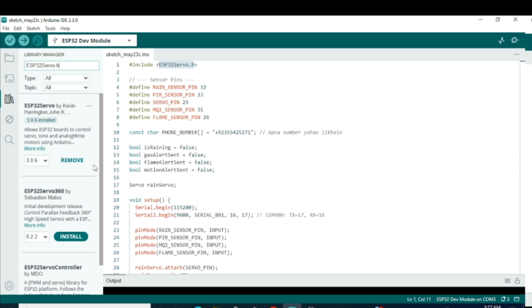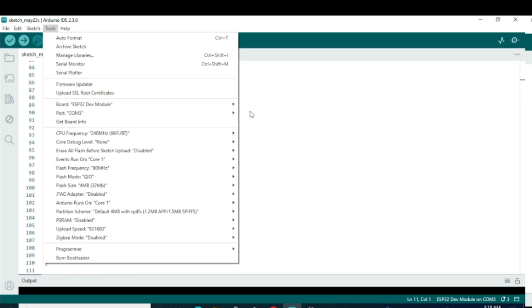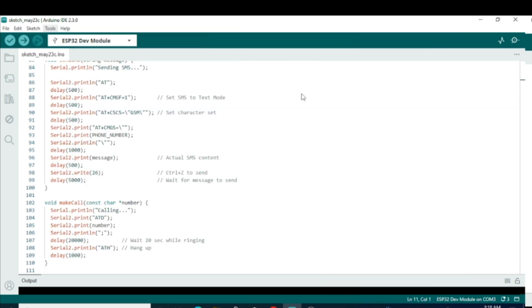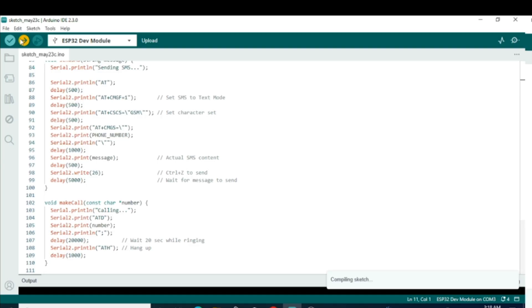Scroll down in the code where you need to write your mobile number. Enter the number where you want to receive the alert message for motion detection, gas, or fire. If you are in Pakistan, start with plus 92, followed by your mobile number. If you are in another country, replace plus 92 with your country code and add your number. After that, go back to Tools. Select the ESP32 Dev Module Board, then select the port, and finally click the Upload button. That's it.